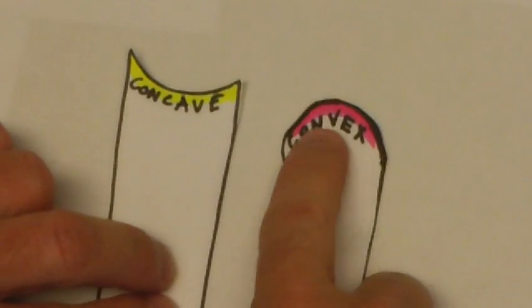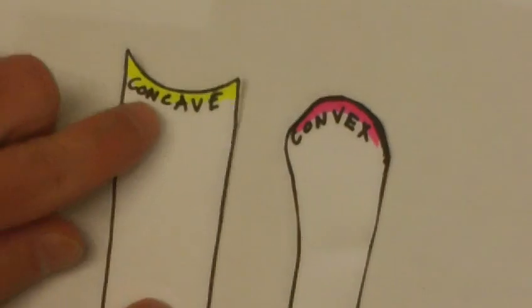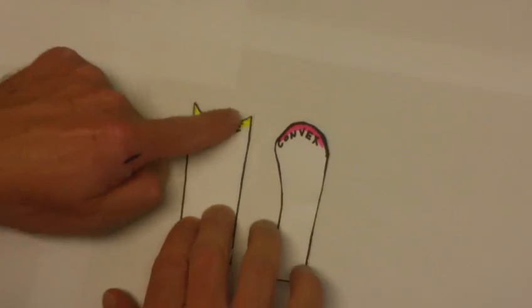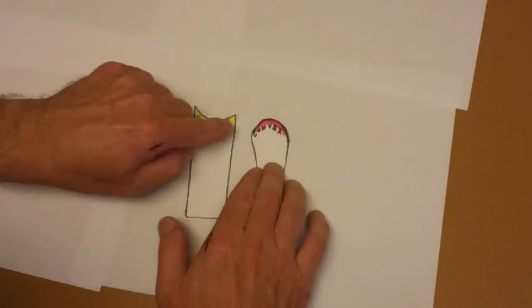You can see I got two bones here. One has a convex surface, this one's pink, and the other one has a concave surface, that's in yellow. You can kind of see that concave is scooped out, whereas this guy curves over.